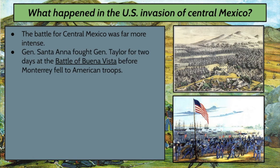Central Mexico was a different story. General Santa Ana — sometimes a general, sometimes the president — fought General Zachary Taylor for two days at the Battle of Buena Vista before the city of Monterrey in northern Mexico fell to American troops. There was a very bloody battle for Monterrey. The Mexicans defended it fiercely, but it eventually did fall to American troops, and Santa Ana was forced to withdraw further south.